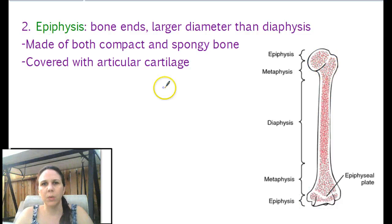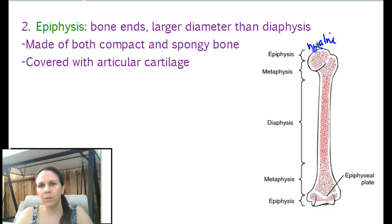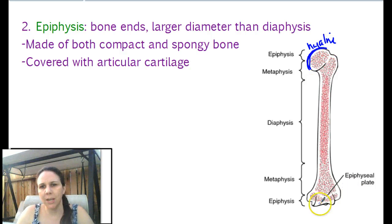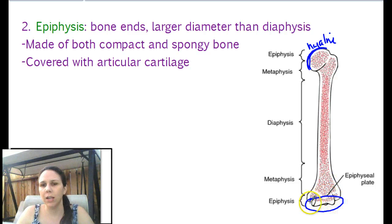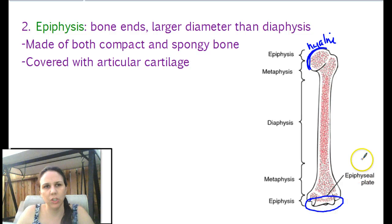And it is usually covered with articular cartilage. Articular is a type of hyaline cartilage that covers the ends of bones where they articulate with another bone. The exception would be at the distal end of the femur and the proximal end of the tibia, because that is where fibrocartilage is found.